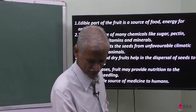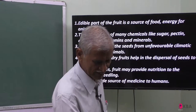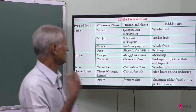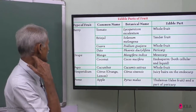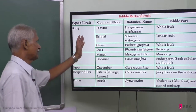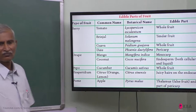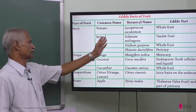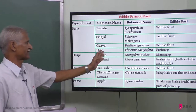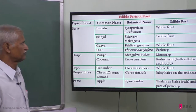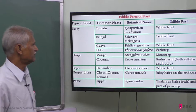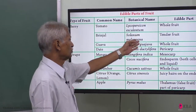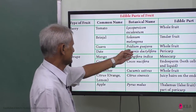Fruits also provide a source of medicine to human beings. Now, what is the edible part? In the berry group — tomato, brinjal, guava, and data — here are the botanical names.